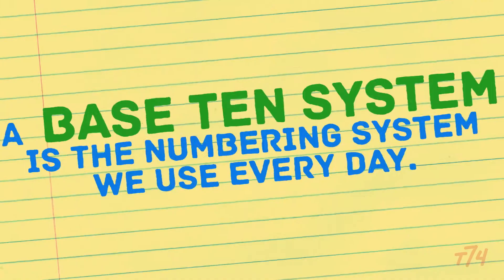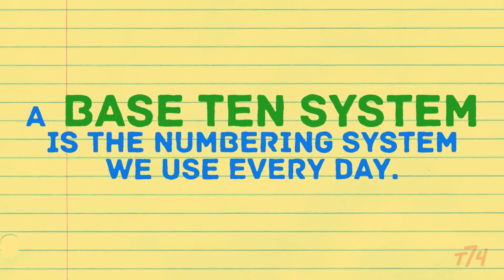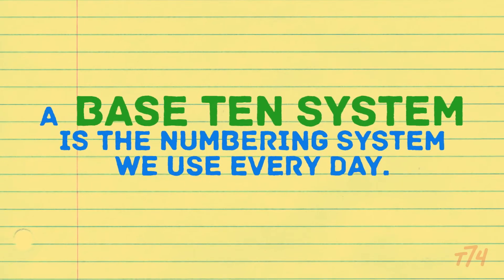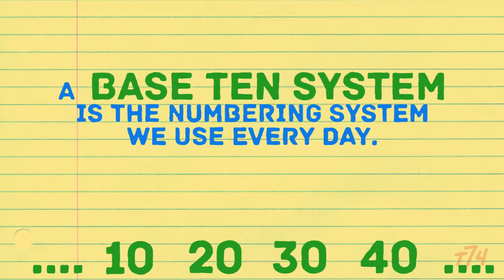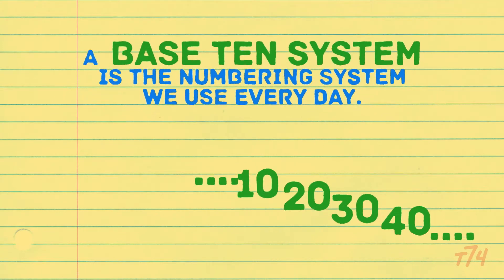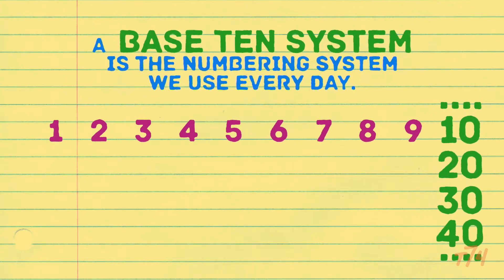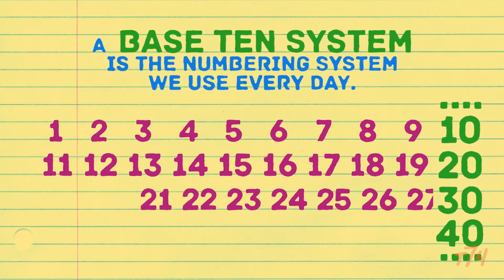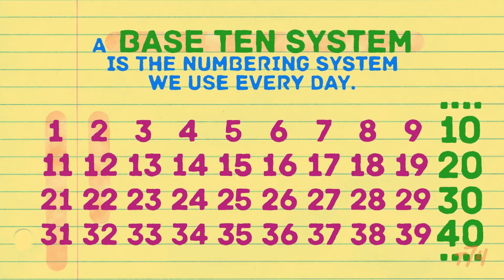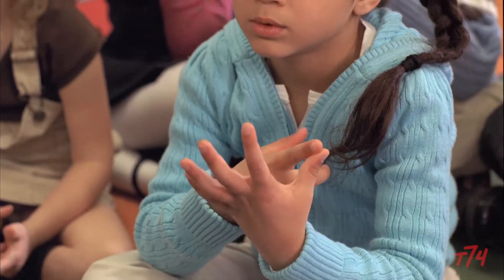Chris uses this tool, the Rekenrek, to help her kids visualize numbers. We're a base ten number system. A base ten system is the numbering system we use every day — simply put, we count in groups of ten. Why? Because of the first thing we learn to count with as kids: our ten fingers.